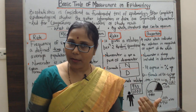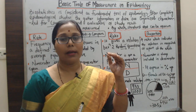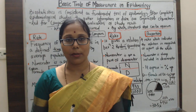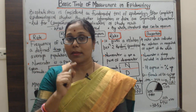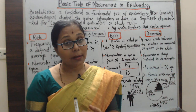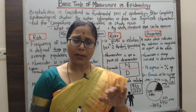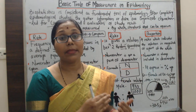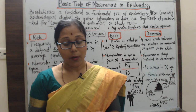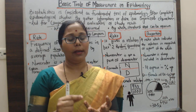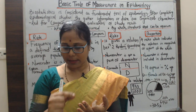Everything requires measurement — without measurement any study will be inaccurate. Since we are measuring about populations, we need biostatistics, which is considered the fundamental tool of epidemiology. There are three basic tools of epidemiology: one is the rate, another is the ratio, and the last one is the proportion.